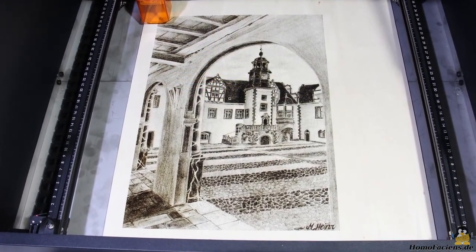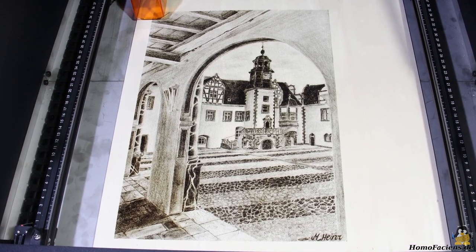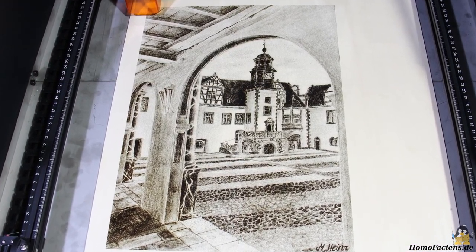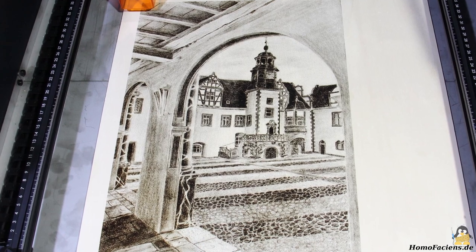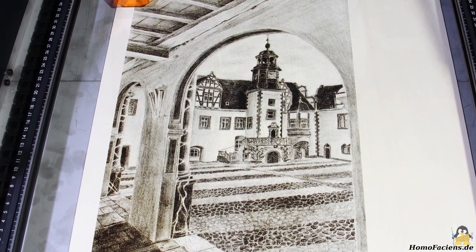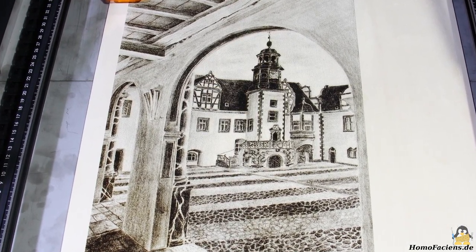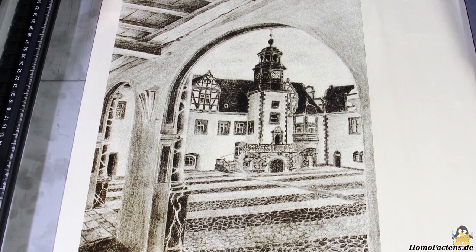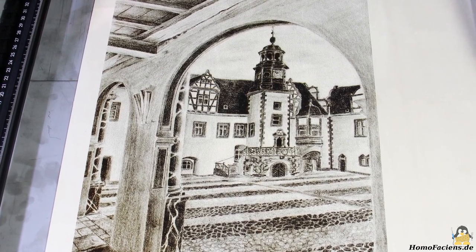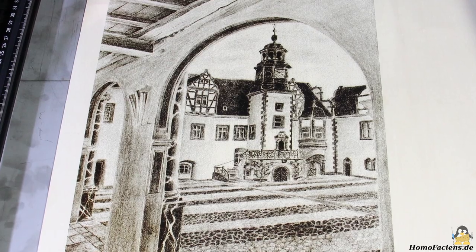With the dimensions 28 times 39cm, the graphic occupies almost the entire work area of the Ortur Laser Master 2 Pro and is finished after about 18 hours. I have used just 30% of the maximum power of the laser module for the engraving.